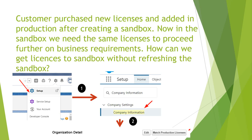Now let's talk about licenses — how can you match new licenses added into production to a sandbox if the sandbox was created before those licenses were added? Simply go to Setup, then go to Company Information. Once you open Company Information, under the organization detail section you will have options for Edit and Match Production Licenses. Click on Match Production Licenses and it will automatically pull the licenses from production into the sandbox.